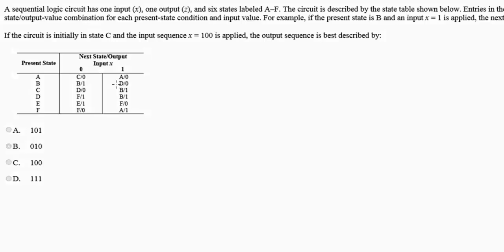So that's basically the problem. Now the question is, if the circuit is initially in state C and the input sequence X is equal to one, zero, zero—this is not hundred, you have to read it as one, zero, zero is applied—the output sequence, what is the output sequence? So that's the question right there.